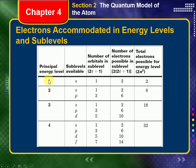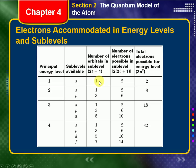For example, when N is equal to 1, L has to be 0 — because the values for L are 0 all the way up to N minus 1, and when N is 1, N minus 1 is 0. So when L is 0, we only have S orbitals, and there's only one S orbital, so the number of orbitals is 1. In every orbital I can have two electrons, so the total number of electrons in N equals 1 is 2.